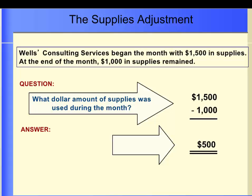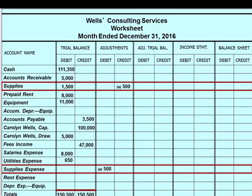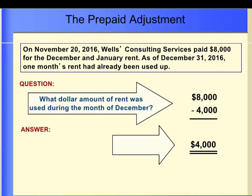Let's first discuss the Supplies adjustment. The business purchased $1,500 of supplies during the month, but by the end of the month only $1,000 of supplies are left. This implies that we must have used $500 of supplies. Wells Consulting Services must make an adjustment to show that the company used $500 in supplies during the month. To do this, we debit supplies expense and credit the asset supplies for the $500 used up. We credit the supplies account $500 and debit the supplies expense account $500. Notice the letter A by both of the adjustments — by keying the adjustments with a letter reference, the accountant can better see the debit and credit amounts of the adjustment.